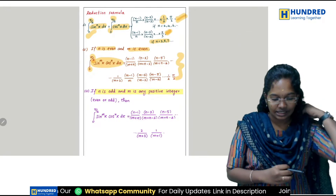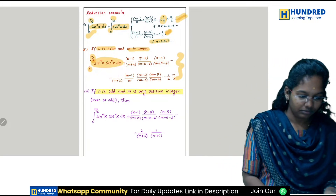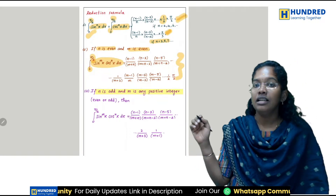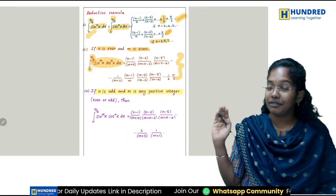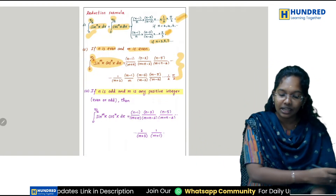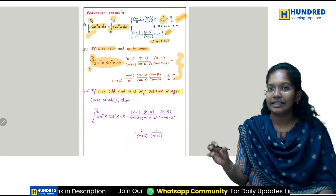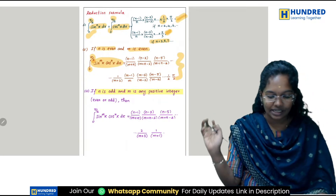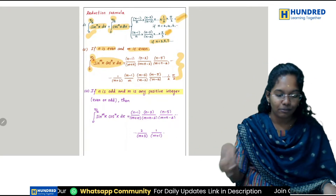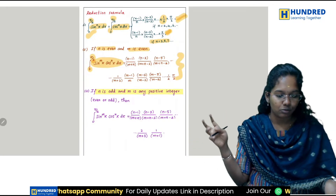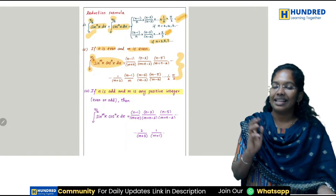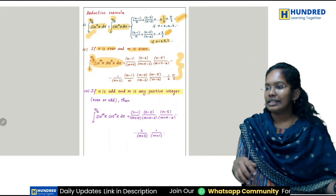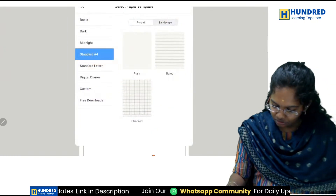One minute. In exercise 9.5, the substitution method is used. I can't find direct formulas — use the formula with cos x or x square terms. We normally take t or u for substitution. That's how we solve those sums. Check exercise 9.5 examples.